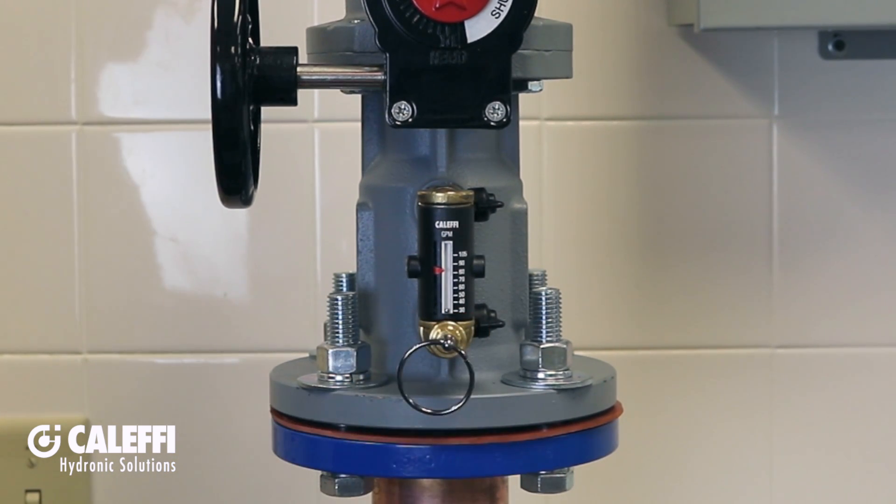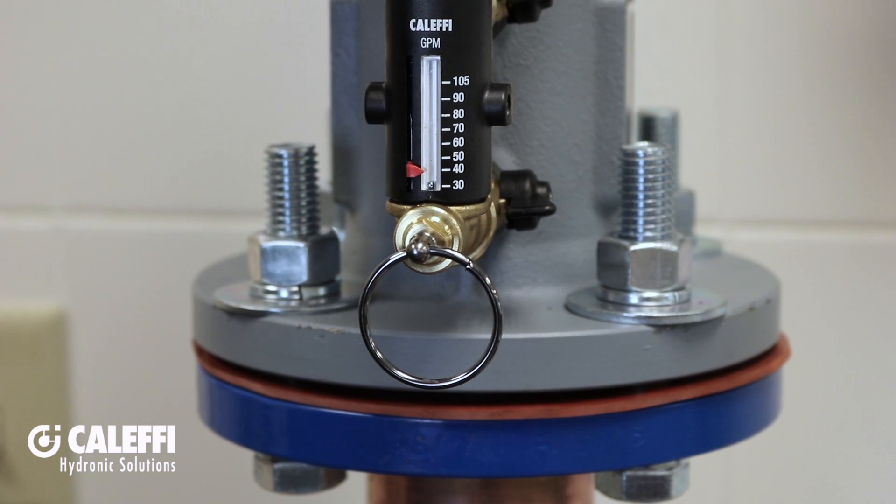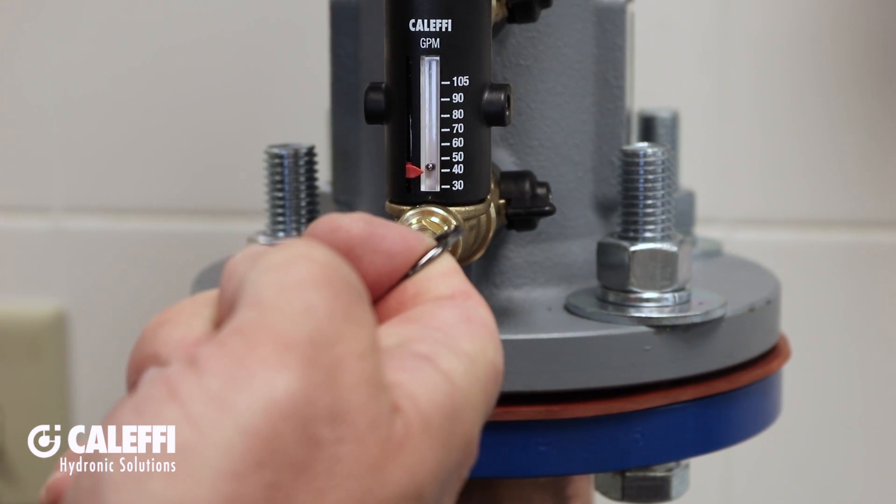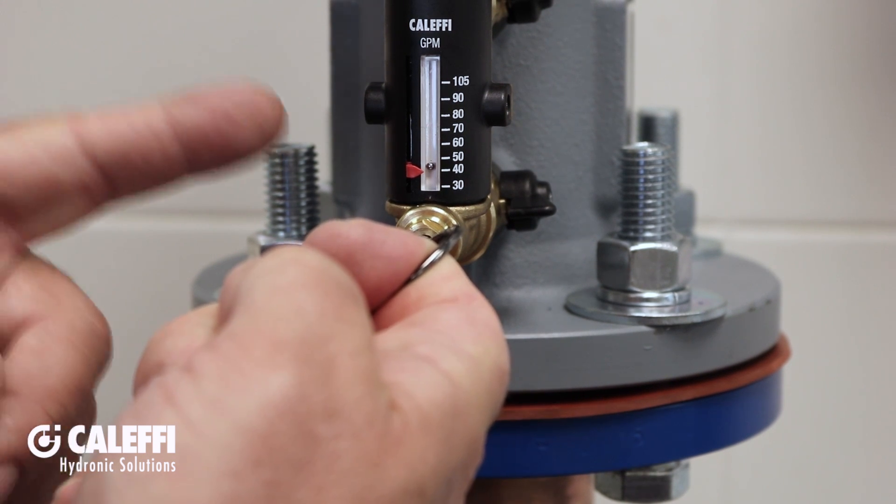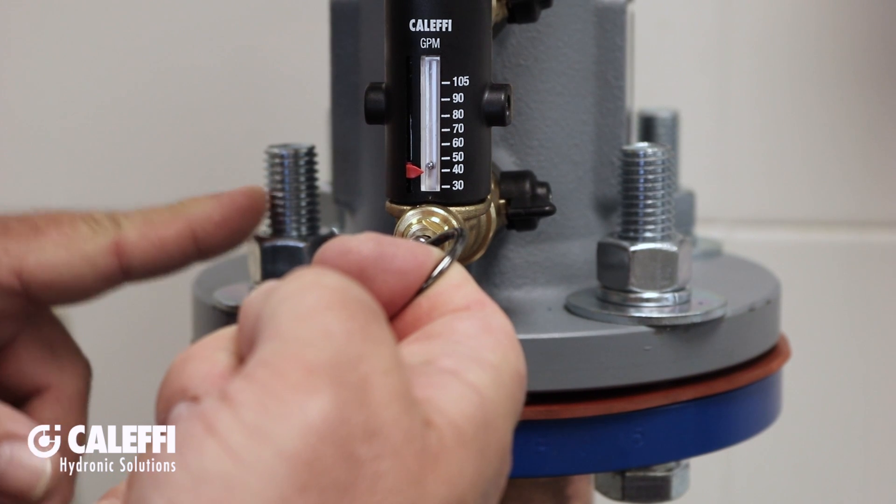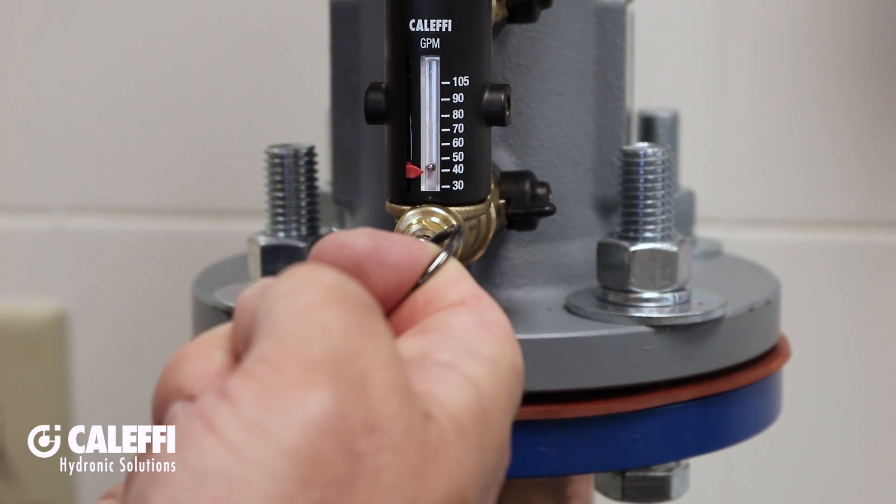Let me show you how to balance the circuit using the quicksetter. With the system pumps running, all I'm going to do is pull this pin. What that does is it opens a small bypass valve which diverts a portion of the system fluid in the main pipe through the flow meter. So holding the pin open,